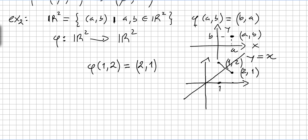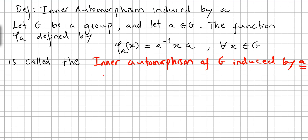We can also say that any reflection across a line through the origin, or any rotation of the plane about the origin, is an automorphism of R². From here we move directly into the concept of an inner automorphism.